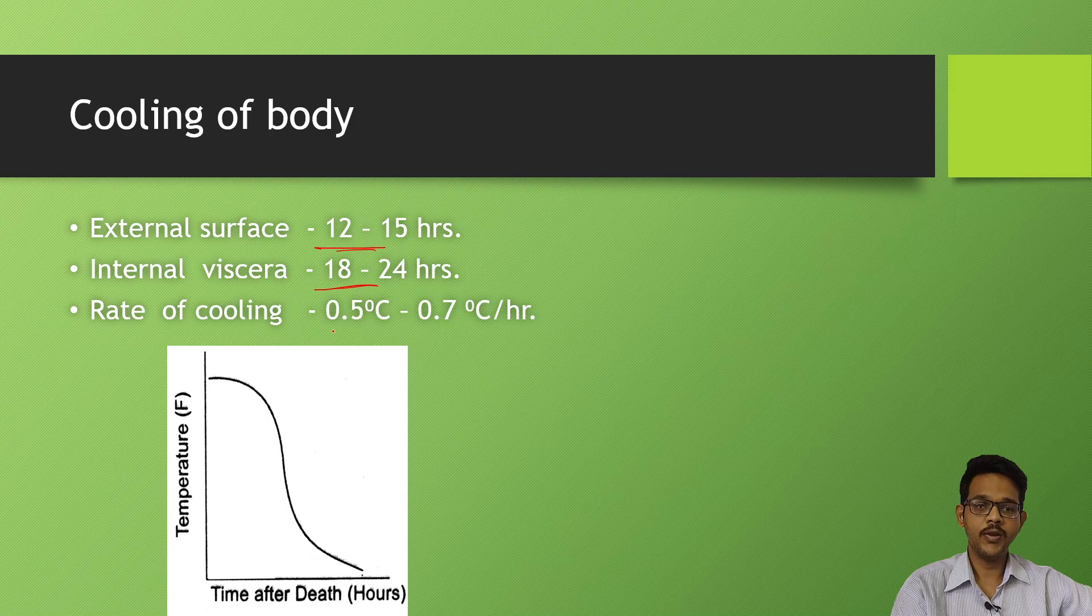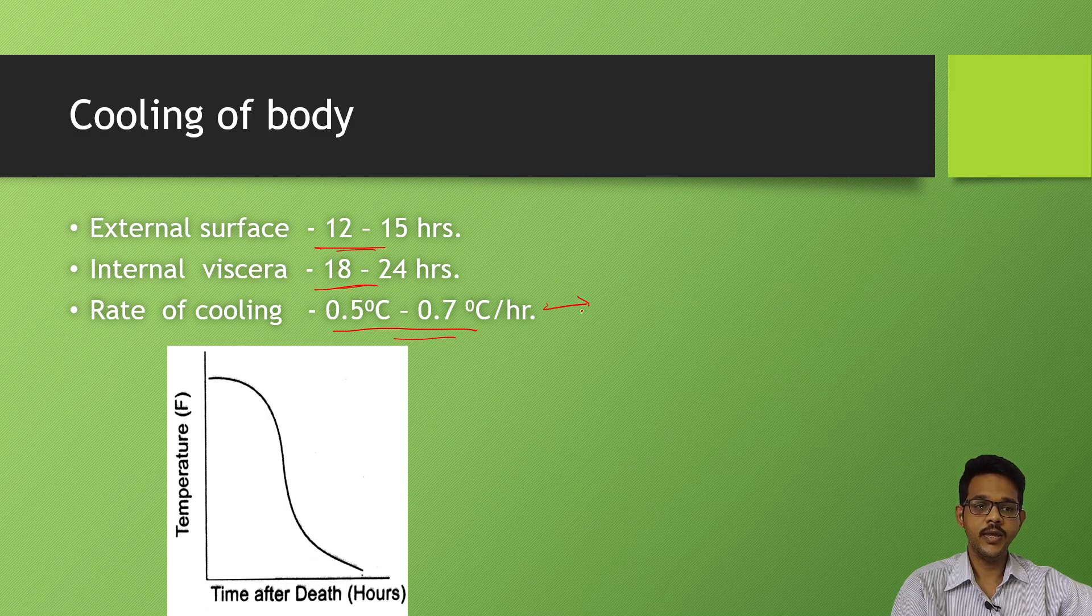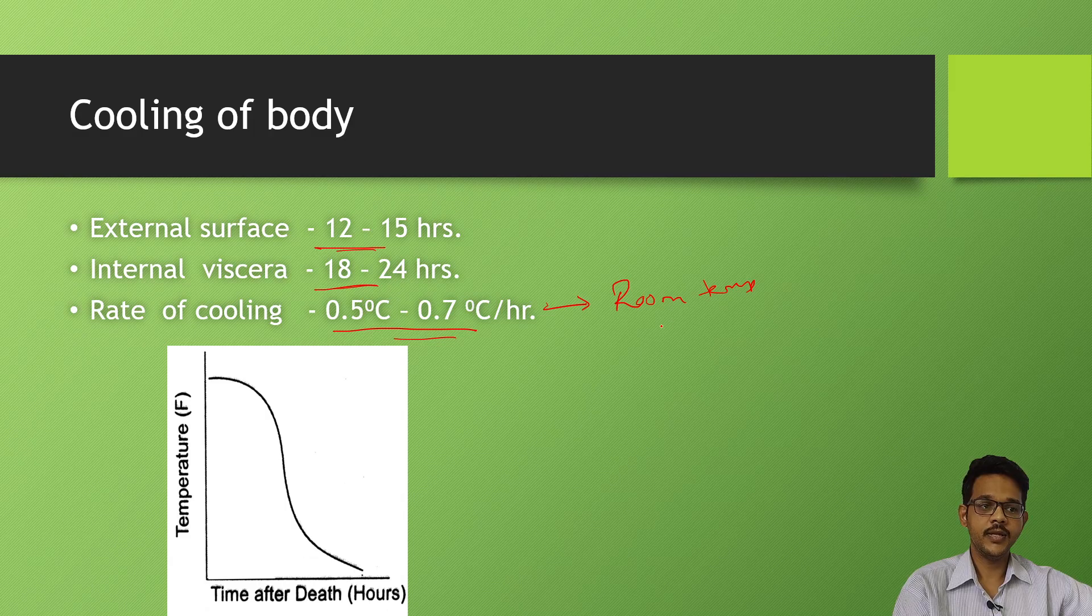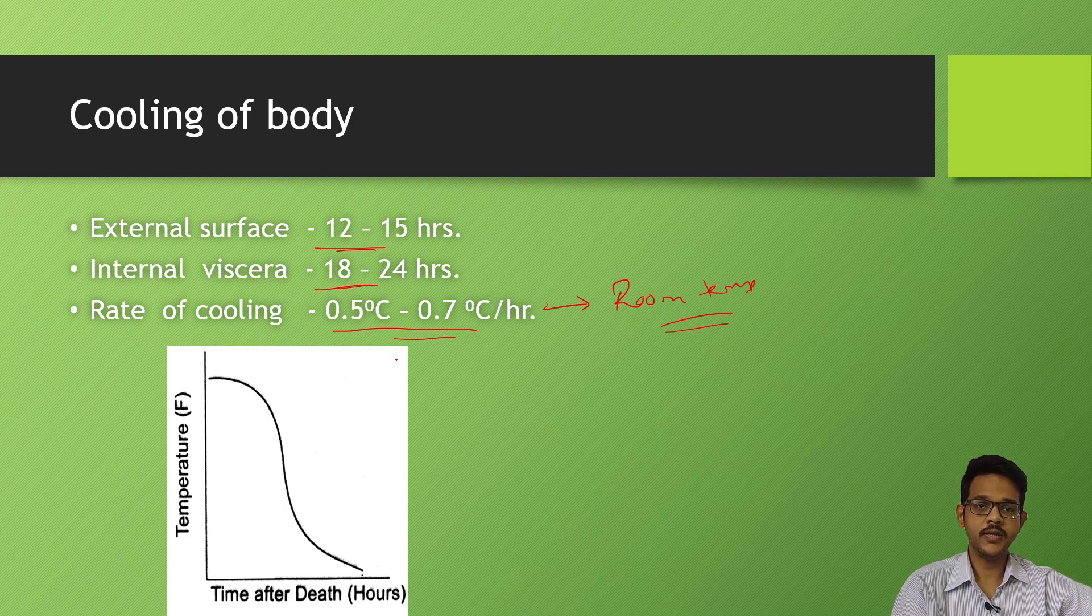Rate of cooling is usually 0.5 to 0.7 degrees Celsius per hour. Rate of decrease occurs till it reaches ambient temperature, room temperature. So always the body temperature reaches and becomes equal to room temperature, after which that temperature doesn't decrease.